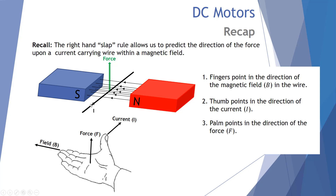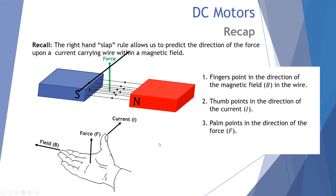In this scenario, with a wire with current moving into the page and the magnetic field going from right to left, we find that the force on the wire is being pushed up the page, as predicted by our right-hand slap rule.